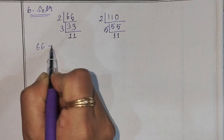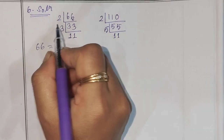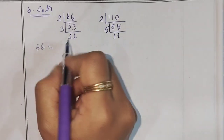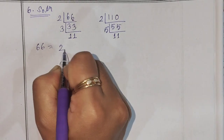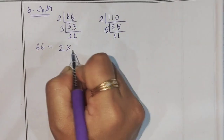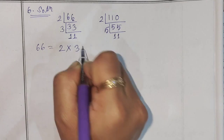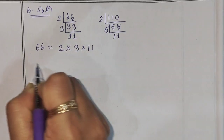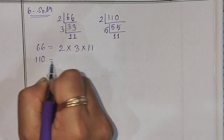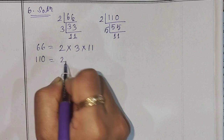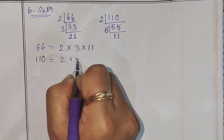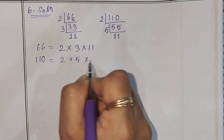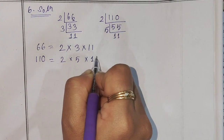This is 66. This is a factor. This is 2, 3 is 11. The factors are 2, 5, and 11.